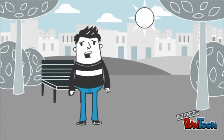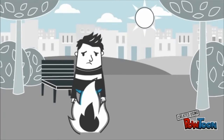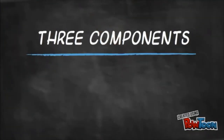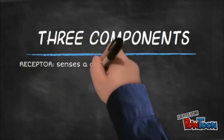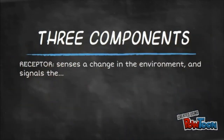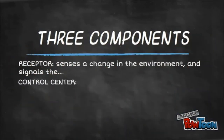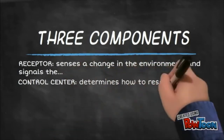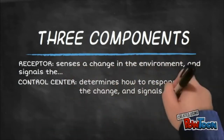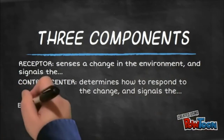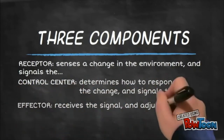All feedback systems consist of a parameter or variable that is the focus of regulation and has three components: receptor, integrator, and effector. The receptor measures the internal environment for the variable and transfers the information to the integrator. The integrator evaluates the information from the receptor and determines whether action must be taken by the effector, and the effector then modifies the internal environment.